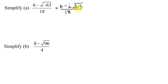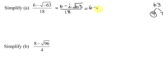Next, I need to simplify the square root of 63. So let's factor 63. Two numbers that multiply together to give me 63: 9 and 7 work. And 9 is a perfect square; 7 is prime. So I can write my expression as 6 minus i times the square root of 9 times 7, all divided by 18.